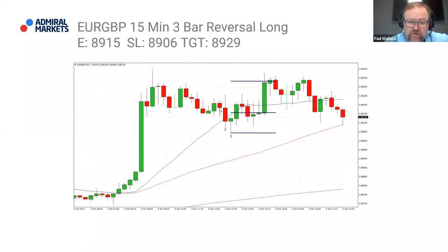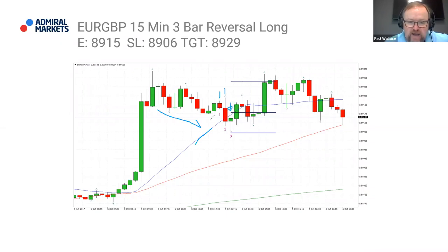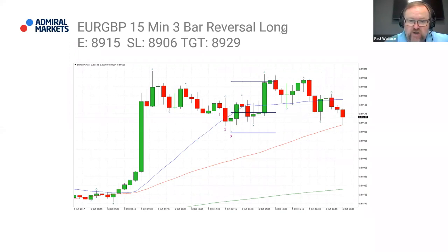This is a very scruffy one in the Euro Sterling — just to show that they're not always perfect looking. Price fell back to the 20 period moving average, two seller bars followed by a green buyer bar, three bar reversal, and the trade went up there and scraped in at one and a half times the target before it went sideways. Scruffy, but it still worked. There is no perfection in trading.